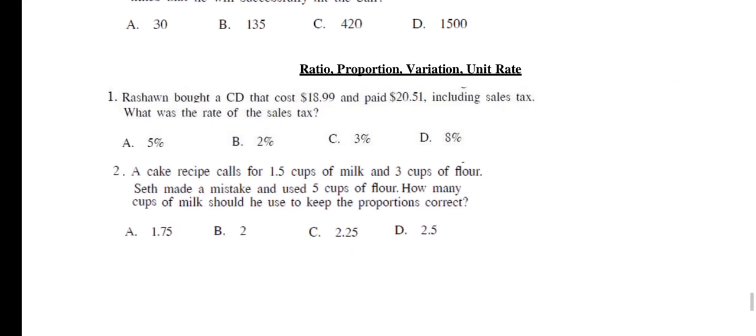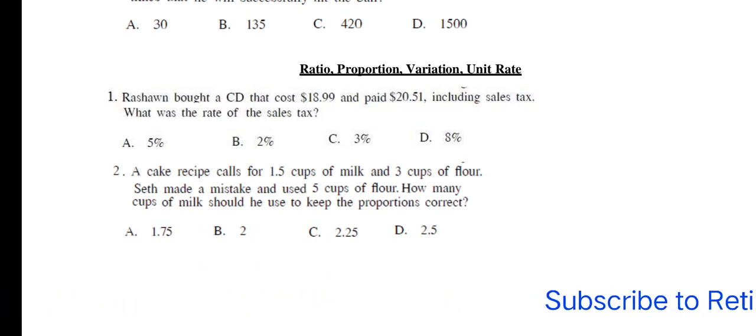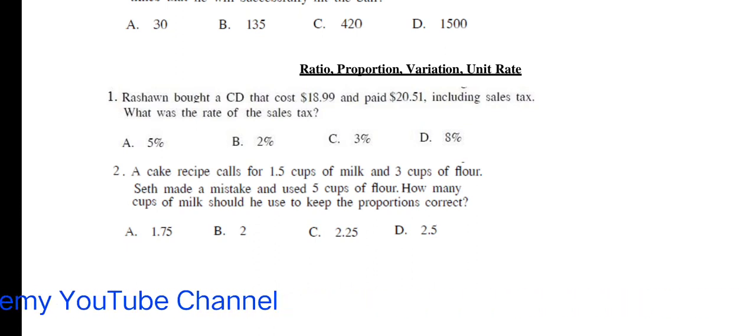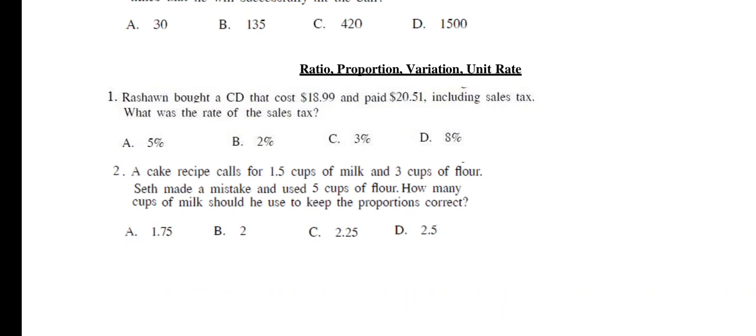Questions related to ratio, proportion, variation, unit rate. Number 1: Rashwan bought a CD that cost $18.99 and paid $20.59, including sales tax. What was the rate of the sales tax? The right option is D, 8%. Number 2: A cake recipe calls for 1.5 cups of milk and 3 cups of flour. Seth made a mistake and used 5 cups of flour. How many cups of milk should he use to keep the proportions correct? The right option is D, 2.5.